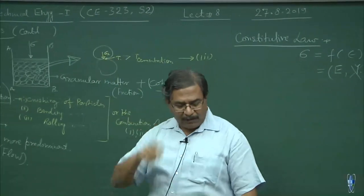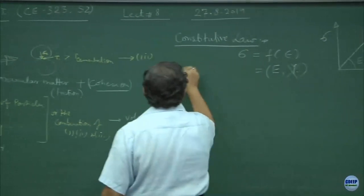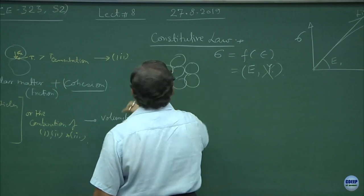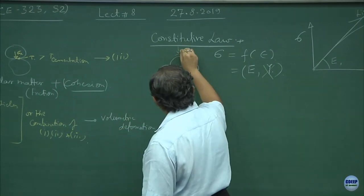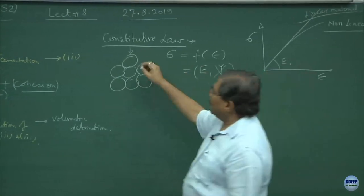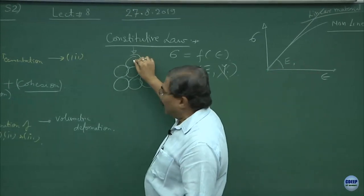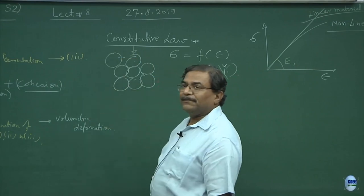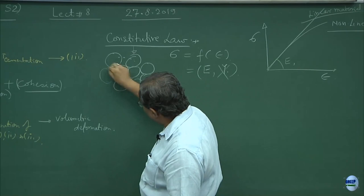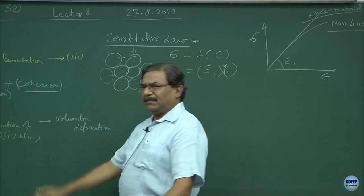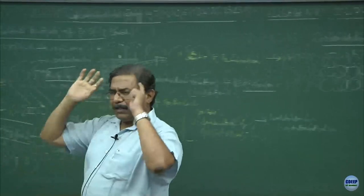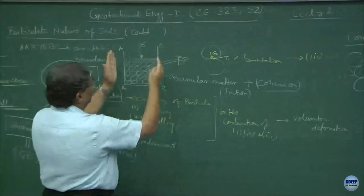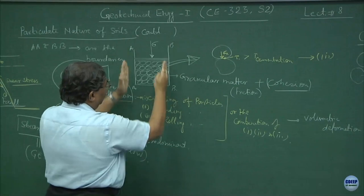If you remember the basic model from last time: you have a set of particles and if I press from the top, this particle will slide over and acquire a new position; the next particle will also slide over and acquire a new position. Everything is being restrained by the boundaries. We will discuss these things in detail.